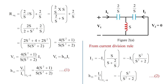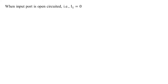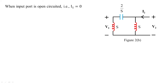We are done with h11 and h21. Now let us find h12 and h22 by open-circuiting the input port, making i1 = 0. Figure 2 changes to Figure 2b — the branch at port 1 becomes dummy and is removed, leaving us with Figure 2b.